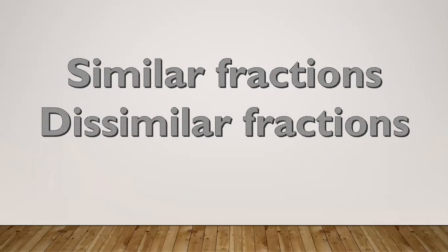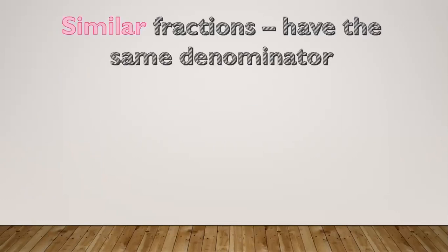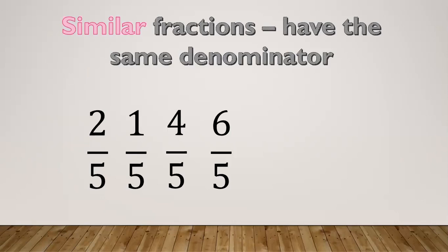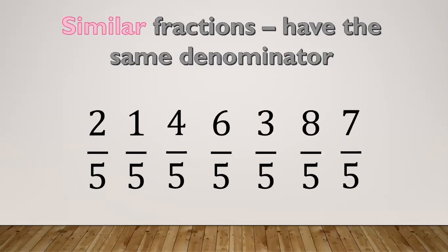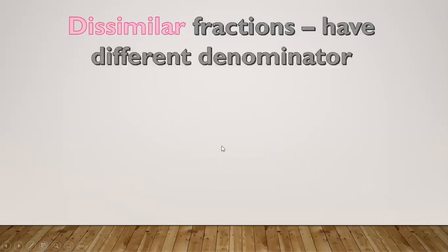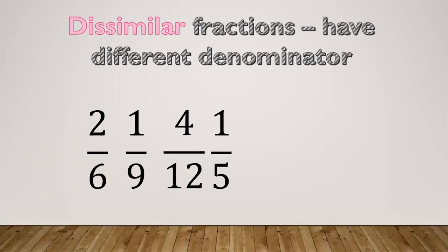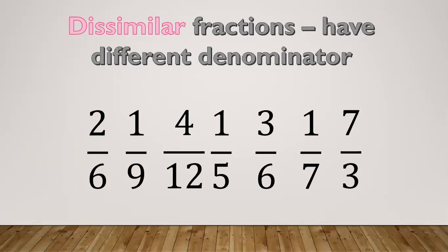We also have similar fractions and dissimilar fractions. You can tell them apart by looking at the denominator. Similar fractions have the same denominator, like 2/5, 1/5, 4/5, 6/5, 3/5, 8/5, and 7/5 — they all share the same denominator. Dissimilar fractions have different denominators, like 2/6, 1/9, 4/12, 1/5, 3/6, 1/7, and 7/3 — their denominators are all different.